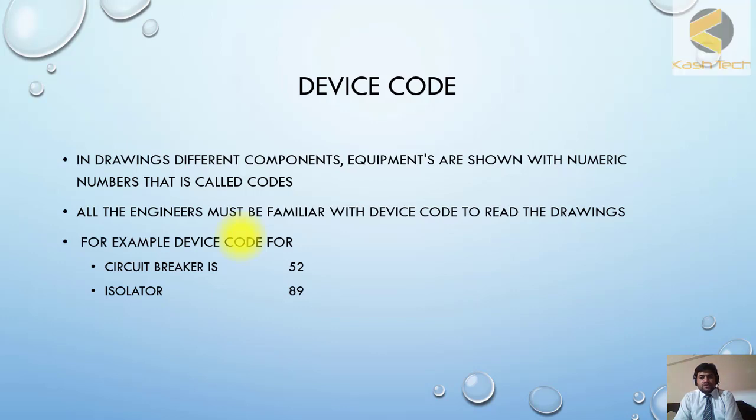For example, here I can see that circuit breaker is shown with the device code 52, and isolator is shown with device code 89. Each and every device has its own codes.